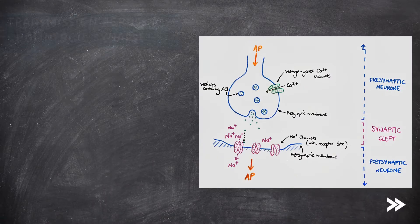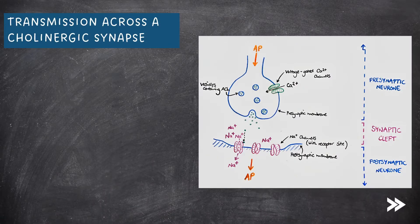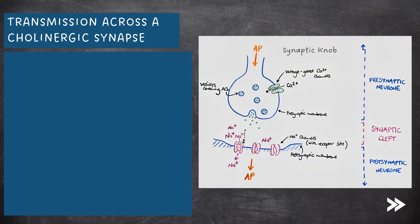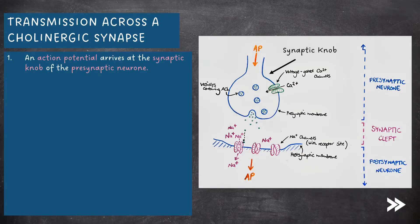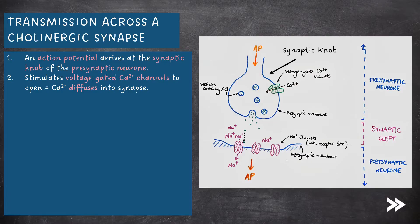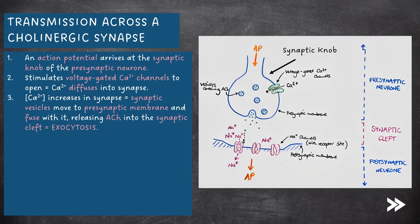How does transmission across a cholinergic synapse work? First of all, an action potential arrives at the synaptic knob of the pre-synaptic neuron. This stimulates voltage-gated calcium ion channels to open, allowing calcium ions to diffuse into the synapse. The increase in concentration of calcium ions triggers synaptic vesicles to move to the pre-synaptic membrane and fuse with it, releasing acetylcholine into the synaptic cleft. This is known as exocytosis.